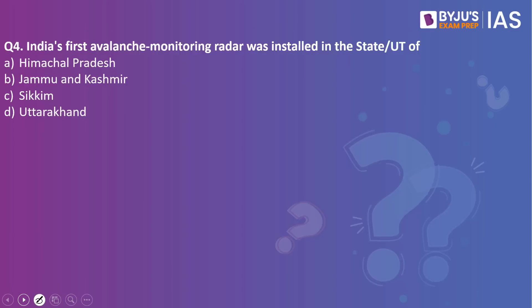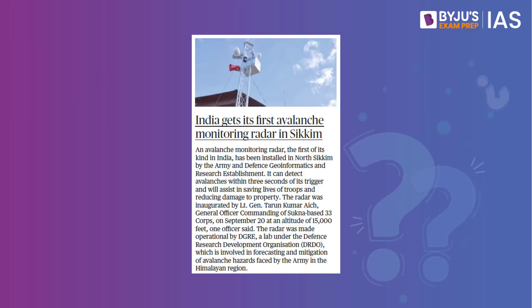Next question: India's first avalanche monitoring radar was installed in — Himachal Pradesh, Jammu and Kashmir, Sikkim, or Uttarakhand? The answer is Sikkim. This article in The Hindu references India getting its first avalanche monitoring radar in Sikkim. It was installed in North Sikkim by the army and the Defence Geo-Informatics and Research Establishment, a wing of DRDO involved in forecasting and mitigation of avalanche hazards in the Himalayan region. It can detect avalanches within three seconds of trigger and can also detect landslides.